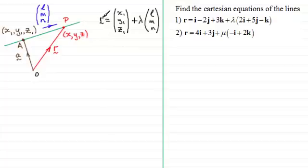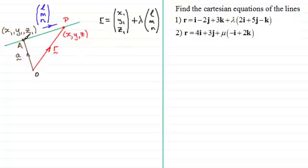R represents the position vector of any point P on this line. Let's say it has coordinates x, y, z. x1, y1, z1 represents a known fixed point on the line. And l, m, n represents a vector parallel to the line.